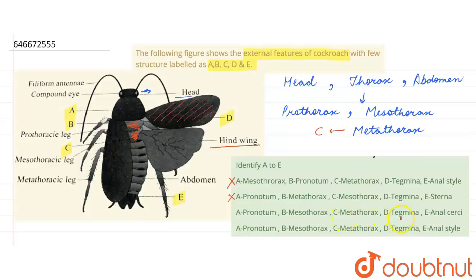D is tegmena, which are the fore wings. That is also correct. And E is anal cercae, so option three is correct here. In last option, they have given anal style. Now, anal style will only be present in the males. So this will also be incorrect. The correct answer is option three. Thank you.